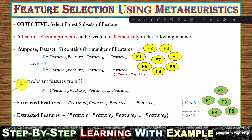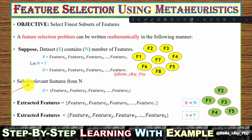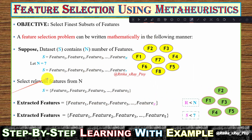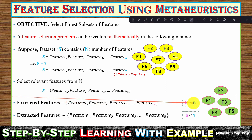We will select the relevant features from this dataset — this process is called feature selection and feature extraction. Suppose we have five relevant features out of a total of seven. We will extract only those relevant features from the dataset.